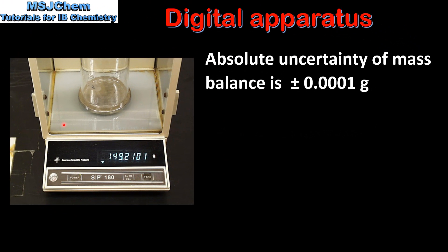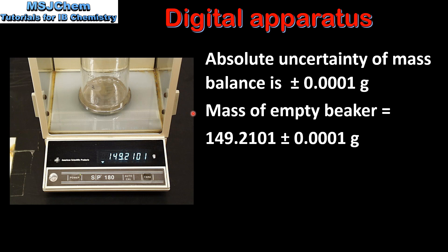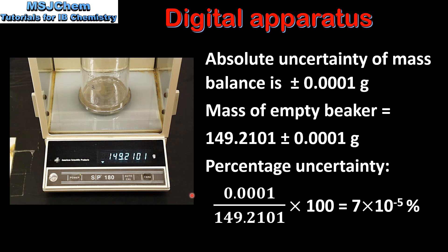In our next example we have a mass balance that can measure to four decimal places, therefore the absolute uncertainty of the mass balance is plus or minus 0.0001 grams. So the mass of the empty beaker is recorded as 149.2101 plus or minus 0.0001 grams. To calculate the percentage uncertainty we divide the absolute uncertainty of the mass balance by the recorded measurement multiplied by 100. This gives us a percentage uncertainty of 7 times 10 to the negative 5 percent.